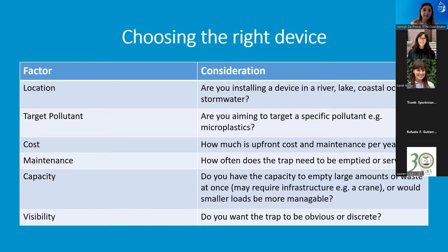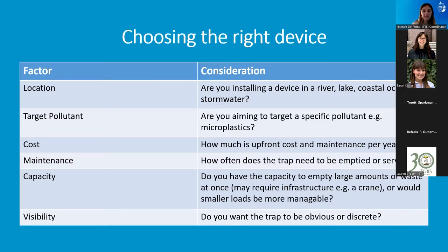Last but not least is visibility. Do you want your trap to be obvious in a really public area — an attraction for the community and a focal point for outreach and education? Or do you want it to blend into the environment and do its job in a less obvious way? This can differ depending on the design of the device. Some devices are really big and bright and can do the former, and some are small and discreet.